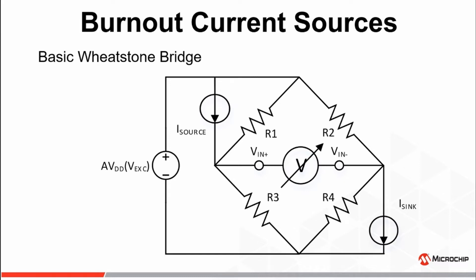If we were to apply the burnout current sources to the VIN-plus and VIN-minus inputs of a healthy bridge for the purpose of diagnostic testing, the resulting differential voltage at the ADC input would still be very small, as the overall contribution to the voltage drop across the R3 and R2 resistors from the I-source and I-sink current DACs would be negligible. However, if the strain gauge were somehow damaged, resulting in an open or short circuit condition, the voltage difference between VIN-plus and VIN-minus becomes very different.